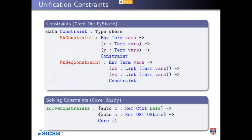Constraints are pairs of terms, or they might be lists of terms. This will happen if we're trying to unify two constructive forms and get stuck comparing the argument lists — we'll store them as a sequence. Otherwise we'll store them as one term. It's convenient to have these separate because almost all things turn up as a single constraint.